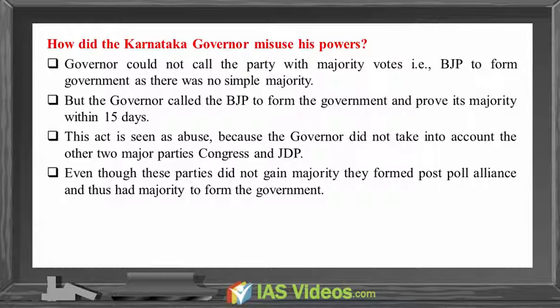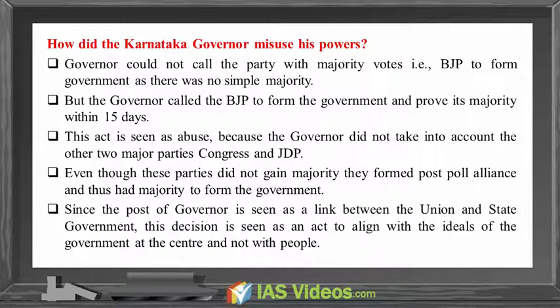Even though Congress and JD(S) did not individually gain a majority, they formed a post-poll alliance and thus had the majority needed to form the government. Since the post of governor is seen as a link between the union and the state government, this decision is viewed as an act to align with the ideals of the government at the centre, rather than with the people.